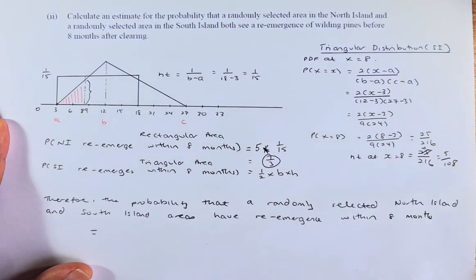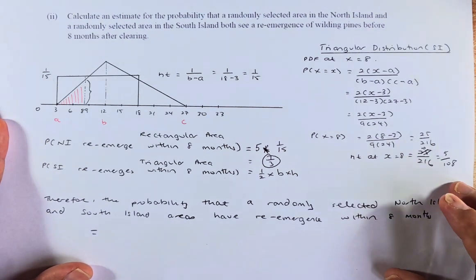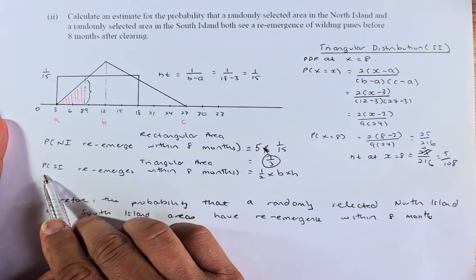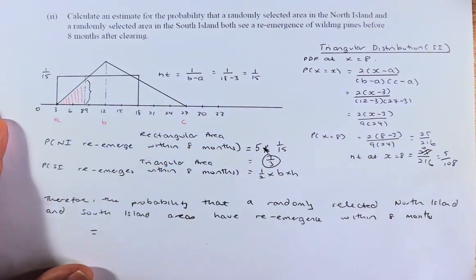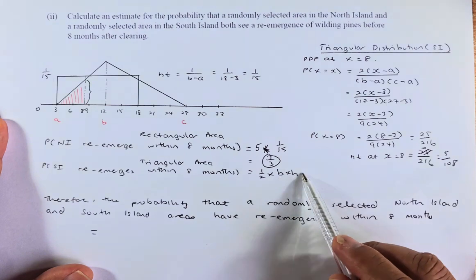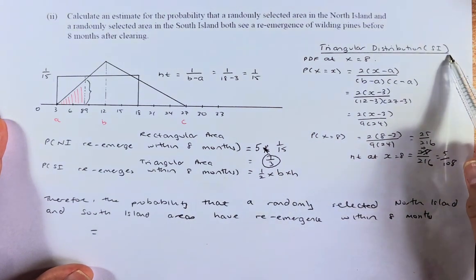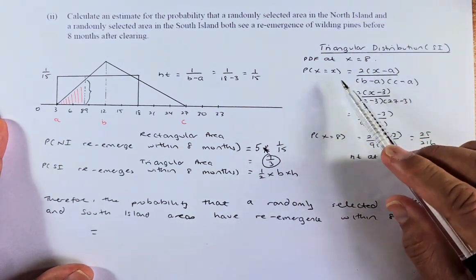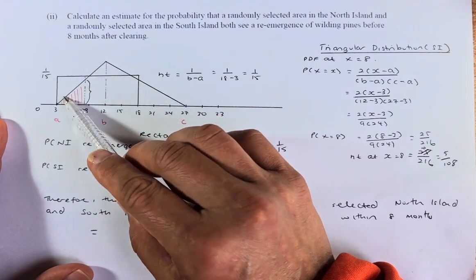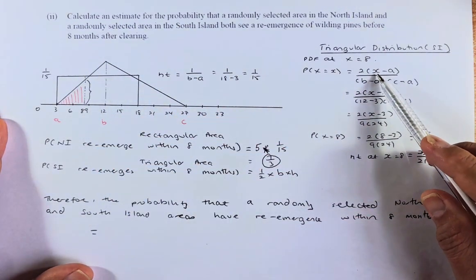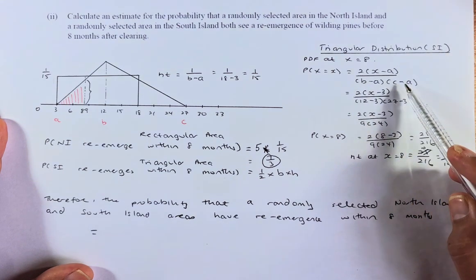Now we are going to calculate for the triangular distribution, which is for the South Island — the probability that the South Island re-emerges within 8 months. We need to calculate the height using the formula from the booklet. The probability distribution function for the triangular distribution at x is: 2 times (x minus a) divided by (b minus a) times (c minus a). We need to identify a, b, and c: a is the smallest value, 3; c is the largest number, 27; and b is the most common number, which is 12.